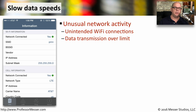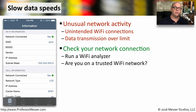If you're noticing unusual network activity, especially unintended connections over your Wi-Fi network, or maybe it seems that you're using more data than you should, then there are a number of things you can do to investigate. One thing you can do is check your network connection. You might want to use a third-party network analyzer to see just how much traffic is going between your mobile device and the rest of the network.